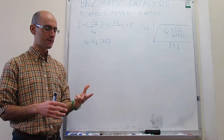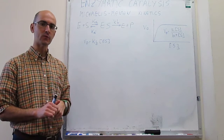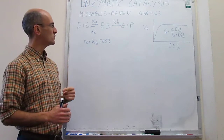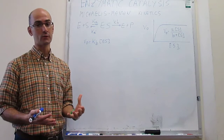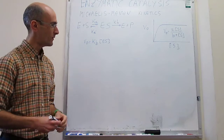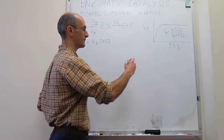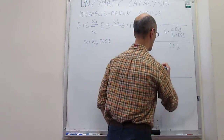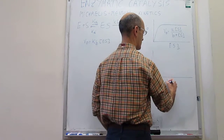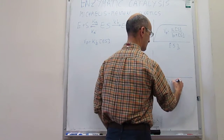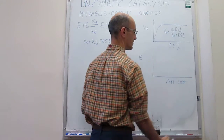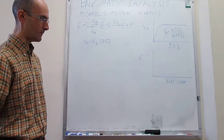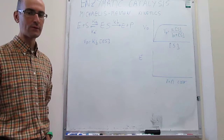There are actually two ways to do this. The first one is the original one proposed by Michaelis-Menten, and that is to assume that there is a pre-equilibrium situation. We can draw an energy diagram for the enzyme-catalyzed reaction, where we plot the energy as a function of the reaction coordinate, which is a measure of the progress of the reaction.